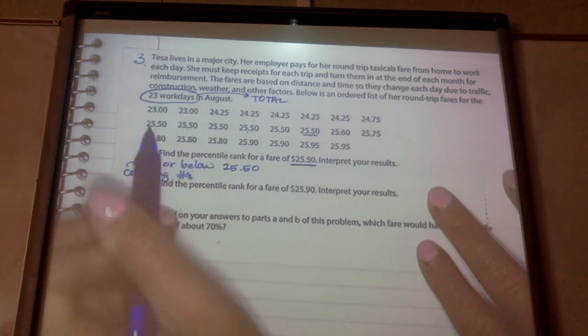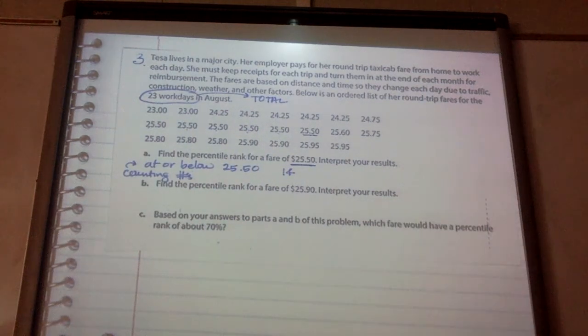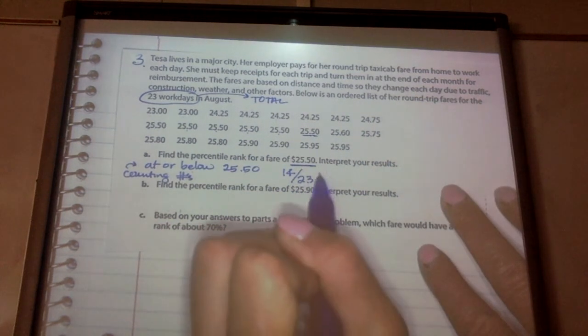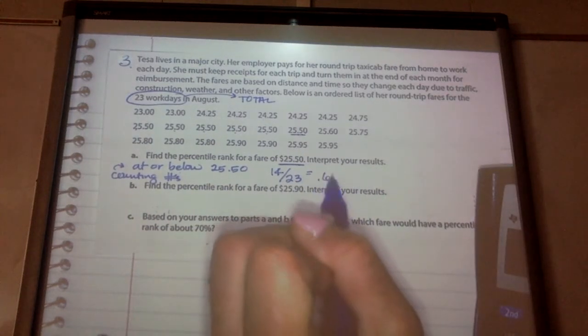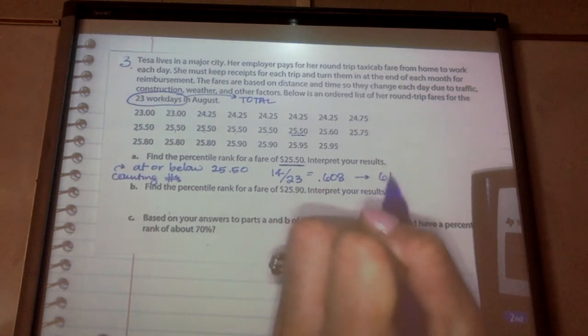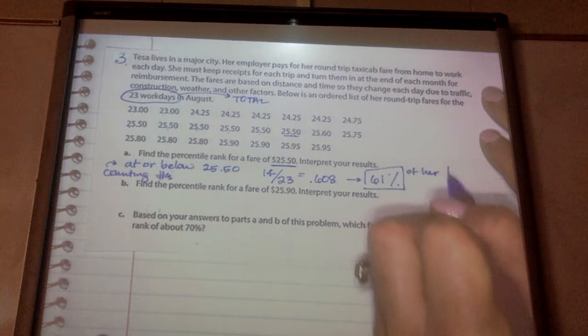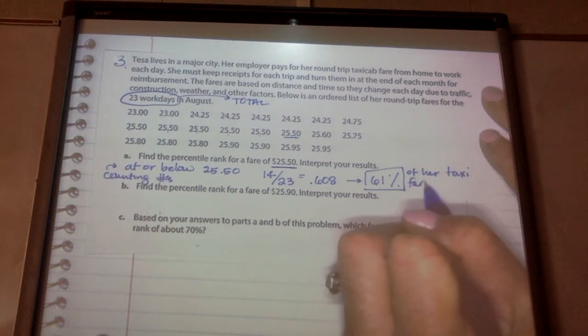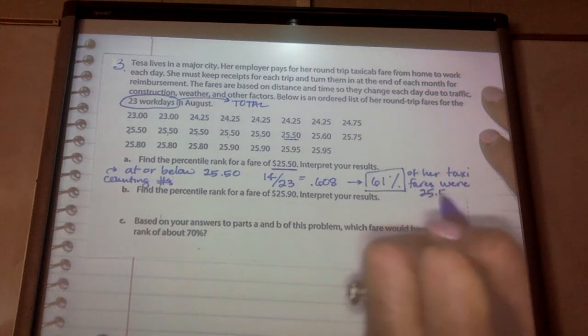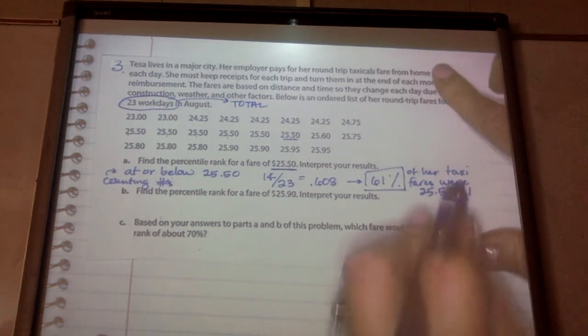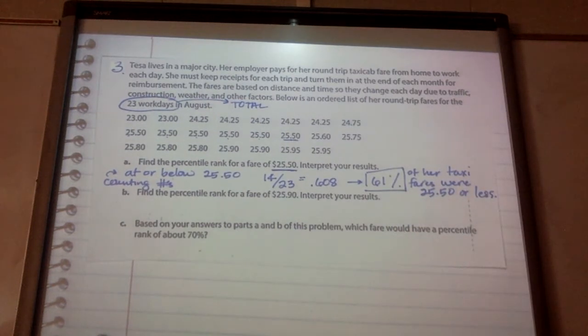There were 14 at or below divided by 23 equals, I got 0.608. So if I rounded that, that would be roughly 61%. So 61% of her taxi fares were 25.50 or less.